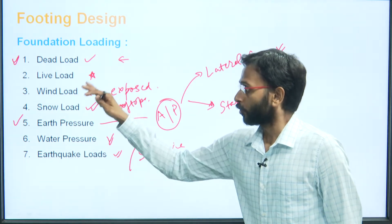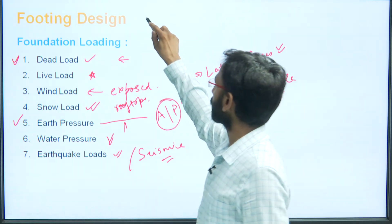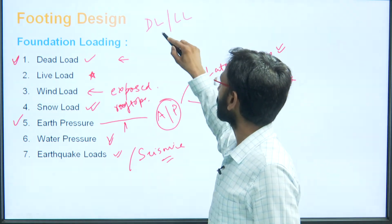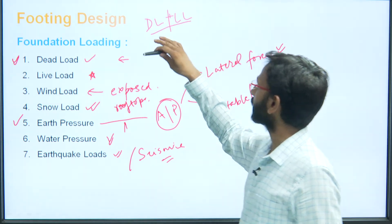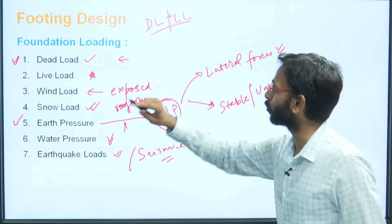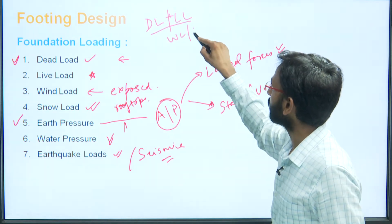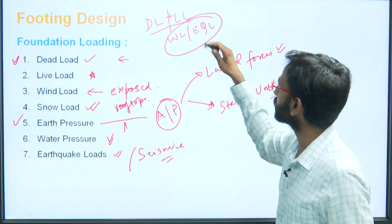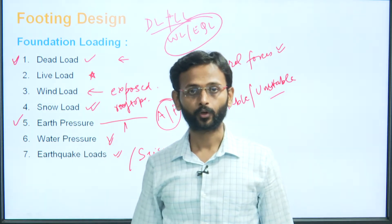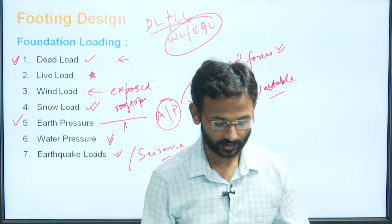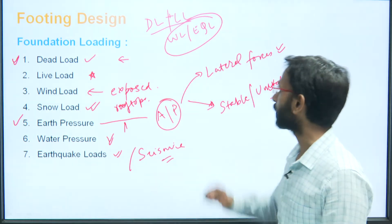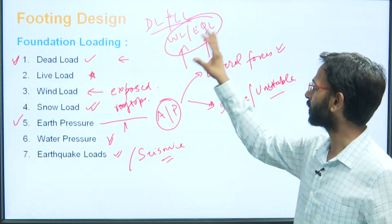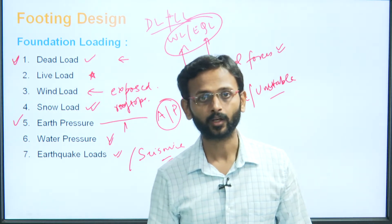One important point: usually we take dead load plus live load, and when wind load or earthquake load must also be considered, we take only one of them — either wind load or earthquake load, whichever is the maximum of the two. We do not take both together simultaneously.